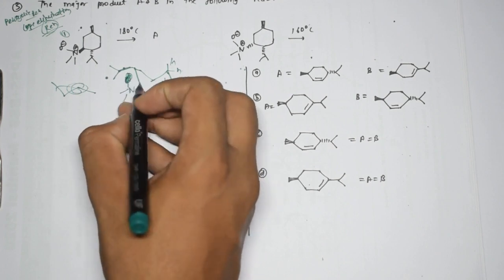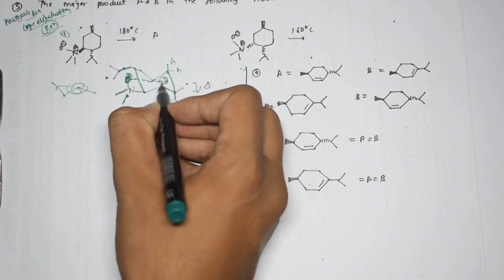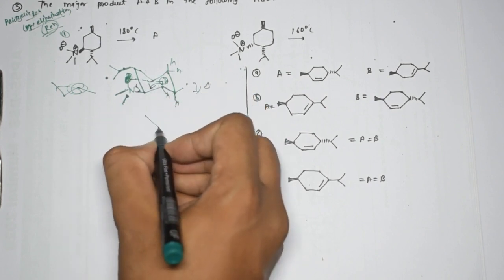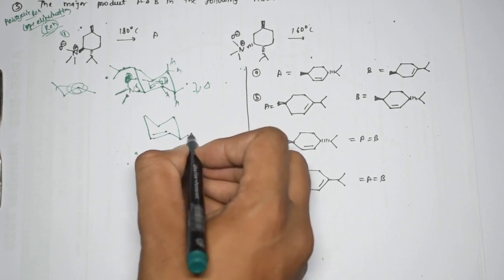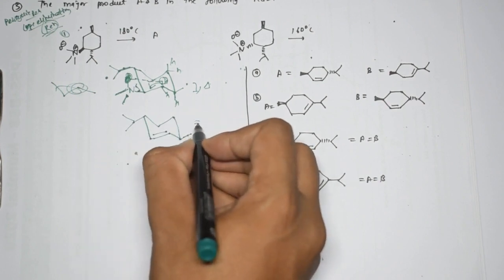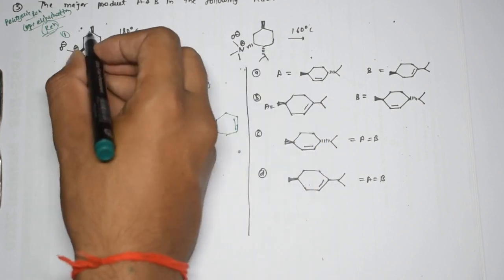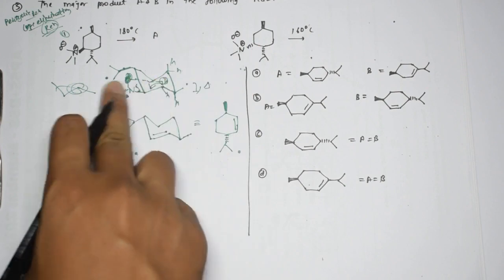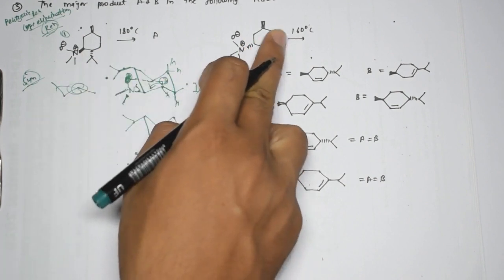In Cope elimination, the N-oxide abstracts a proton from its adjacent carbon. Once it abstracts that proton, the bond shifts and the adjacent bond breaks, forming a double bond - this is a syn elimination. The product has a double bond with the methyl and rest of the ring, and since it's syn elimination, both leaving groups must be on the same side.